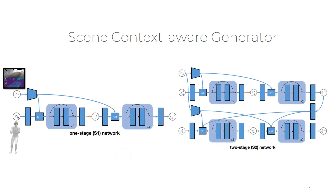We use conditional VAE models to generate body parameters conditioned on scene representations. The one-stage model generates all body parameters based on the scene, while the two-stage model first generates body global translation and orientation, and then generates the body shape, pose, and hand pose.